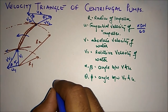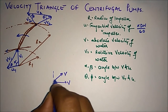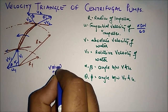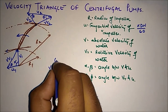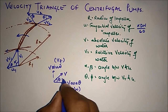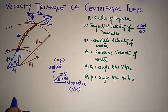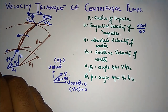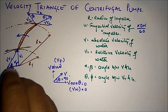Now, the absolute velocity V has two components: the horizontal component is V*cos(theta), which is the whirl velocity, and the vertical component is V*sin(theta), which is the flow velocity. When this angle becomes 90 degrees, V*cos(theta) will be zero since cos(90) is zero, so the whirl velocity Vw will be zero. When water enters radially, this angle is 90 degrees from the tangent.